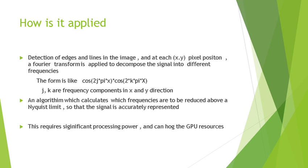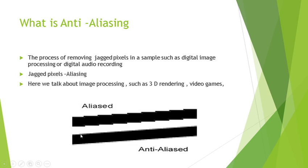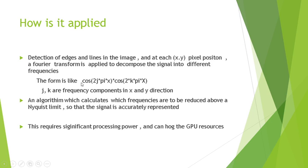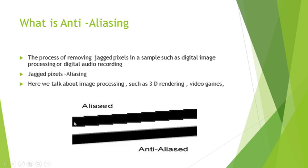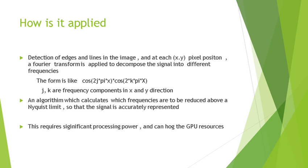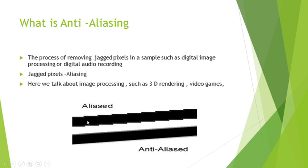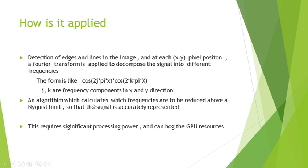At every point in the image, the edges and lines are detected. The algorithm detects these features, and a Fourier transform is applied to decompose the signal into different frequencies. In a real-time 3D application like a video game, there are many moving frames per second — it is actually a dynamic signal coming from the graphics card to the monitor. The transform operates on a grid-by-grid basis.